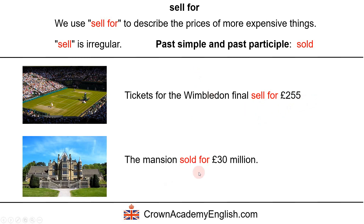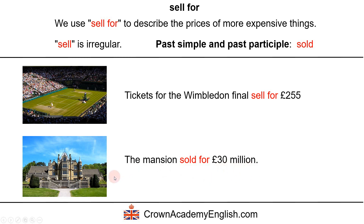Here we have an example in the past: the mansion sold for 30 million pounds. This is the past simple, so this is the actual real price that the mansion sold at — the real price when it was sold.